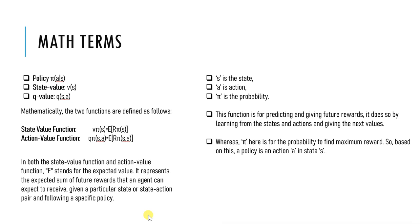The last one is expected value. The E that you see here — the expected value is calculated by taking a weighted average of all possible outcomes, where each outcome is weighted by its probability of occurring. The weights are determined by the transition probabilities and the policy followed by the agent.